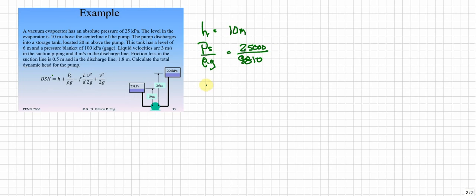And then our FLV² over D times 2G. So FL over D V² over 2G. And that is going to equal 0.50 meters. And this will come out to be meters as well.